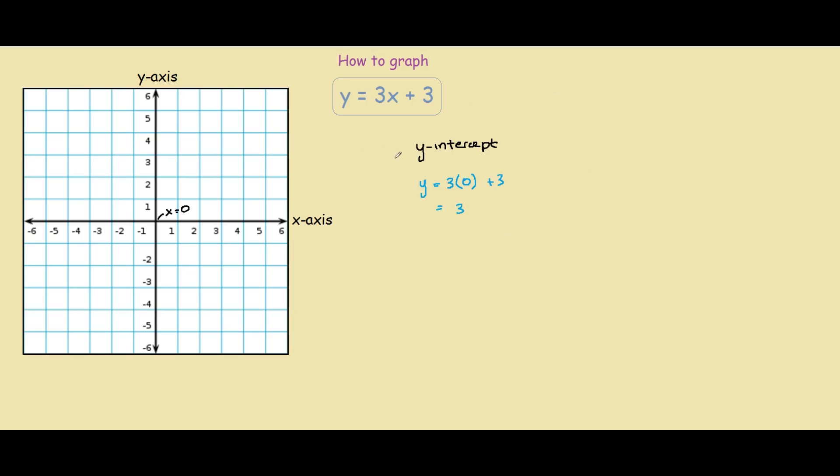So we found our first point on the graph, the y-intercept, and this occurs at (0, 3). This bracket means that 0 is the x-coordinate and 3 is the y-coordinate. On the graph, it would be here, (0, 3). That is our first point on the graph.